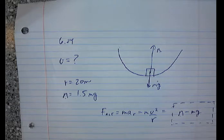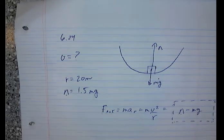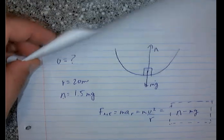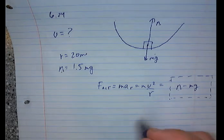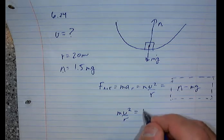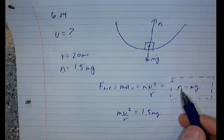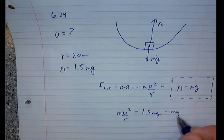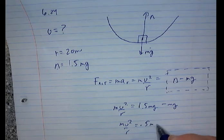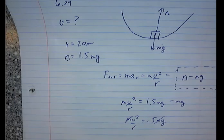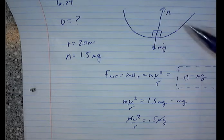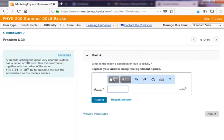It looks like we don't know the mass, but let's put everything in — maybe the mass cancels out. MV²/r equals the normal force, which is 1.5 MG, minus MG, so MV²/r equals 0.5 MG. The M's cancel out, and then we can solve for the speed. There's a net force towards the center, as shown in the picture, and that's what drives the circular motion.